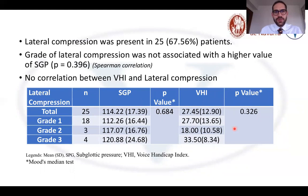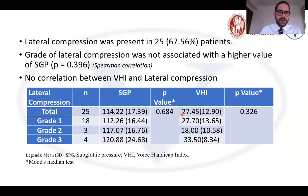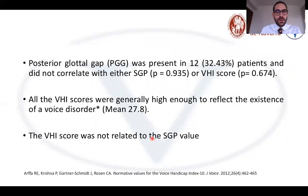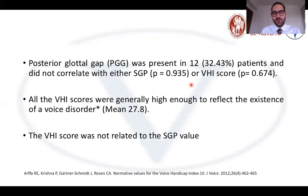Regarding lateral compression, it was present in 25 patients. The grade of lateral compression was not associated with higher subglottic pressure values, and there was no correlation between the Voice Handicap Index and lateral compression — no statistically significant difference was found between the three grades. We also analyzed posterior glottal gap, which was present in only 12 patients. It was not related to the Voice Handicap Index. All Voice Handicap Index scores were high enough to reflect the existence of a voice disorder, and VHI was not related to subglottic pressure.